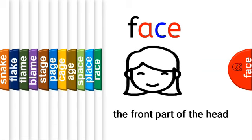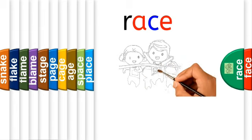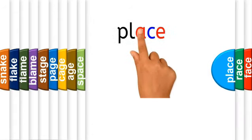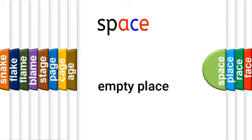Our first keyword is 'face'. It is a very familiar word to you. Face is the front part of the head. The next keyword is 'race'. Sometimes you make a race with your friends in school, right? Race means competition to run. And then, 'place'. You have visited many beautiful places, haven't you? Place is a particular position or location. The next word: 'space'. Space means empty place.